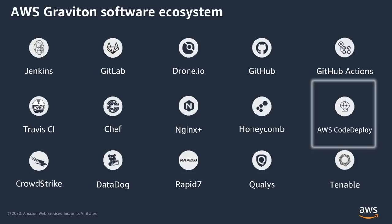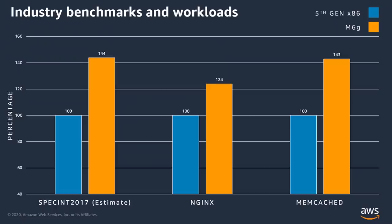In DevOps tools we have popular examples including Chef, GitLab, Jenkins, AWS CodeSuite, and Travis CI. The ecosystem truly is ready and developers can build their open source apps on Graviton 2 today with confidence.